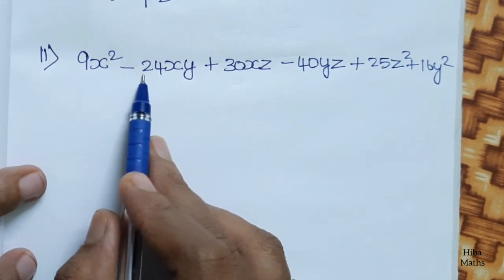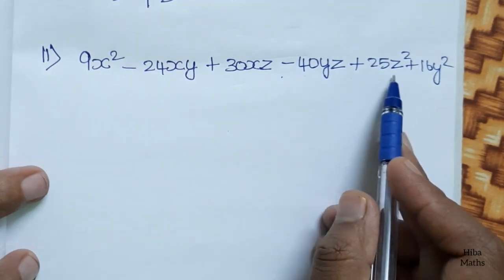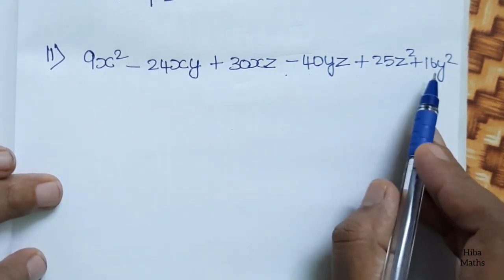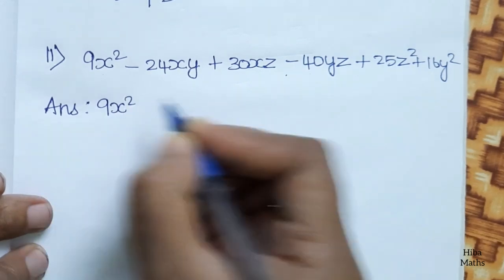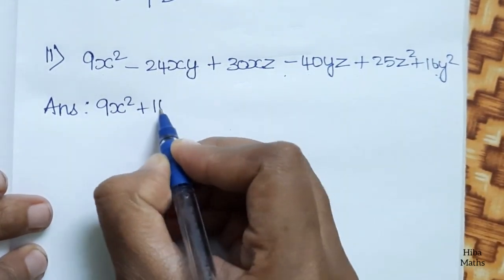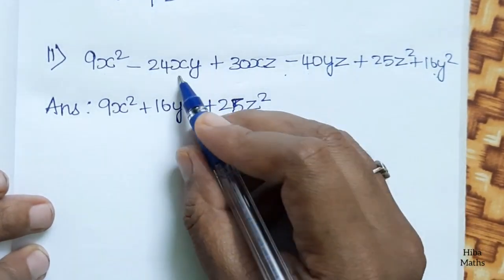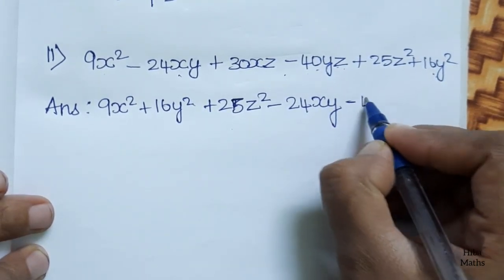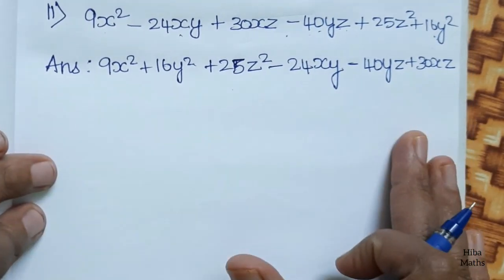Second question: 9x² minus 24xy plus 30xz minus 40yz plus 25z² plus 16y². We are going to use the terms x², y², z² and shuffle the order. Answer starts with 9x², then 16y², then 25z², with cross terms minus 24xy, plus 40yz, plus 30xz.